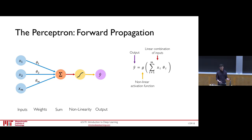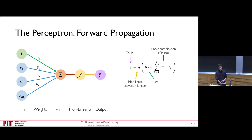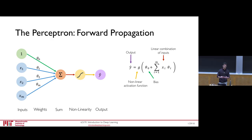One important detail I left out is the notion of a bias — that green term that allows our model to shift the activation function to the left or right, enabling us to still provide a positive output even when we have no input features. Using linear algebra, we can rewrite our equation as a dot product between X and theta, adding our bias theta 0, and applying our nonlinearity G.